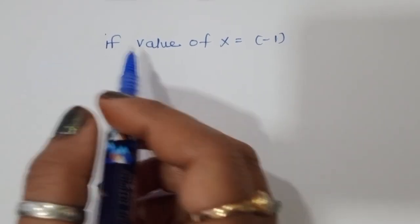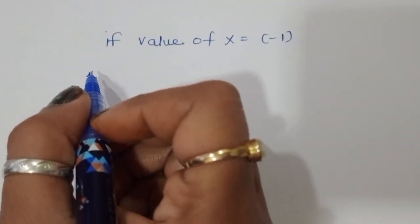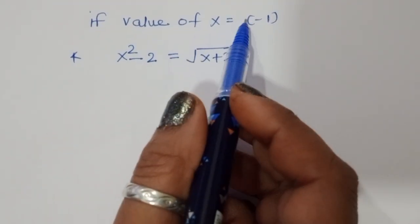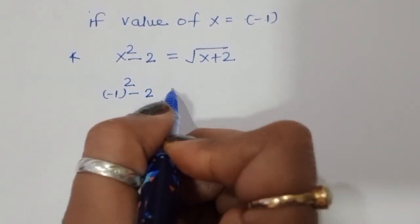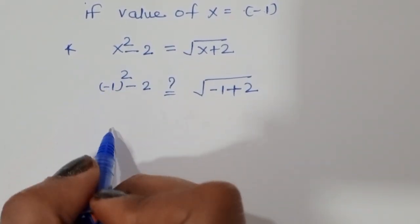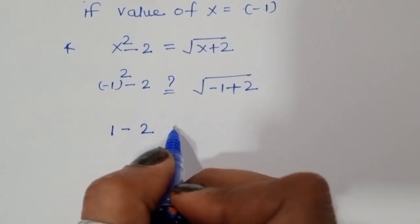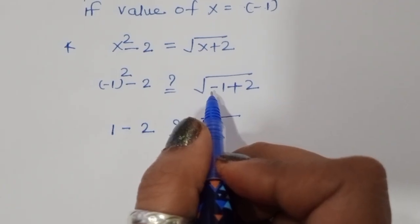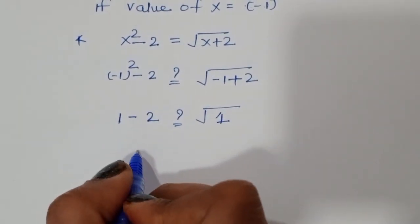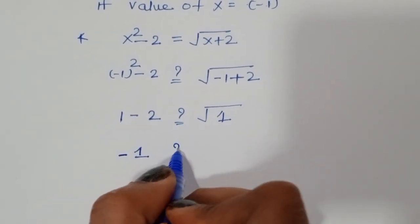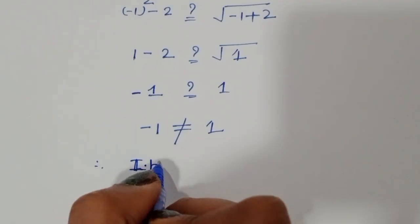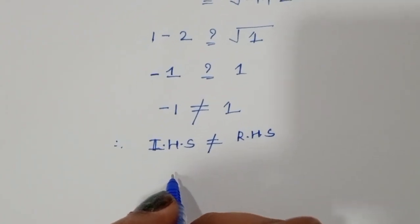For x4 equals minus 1: substituting, minus 1 whole square minus 2 equals 1 minus 2 equals minus 1, and square root of minus 1 plus 2 equals square root of 1 equals 1. Since minus 1 is not equal to 1, LHS is not equal to RHS, so x equals minus 1 is rejected.